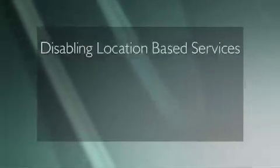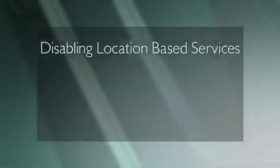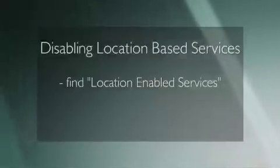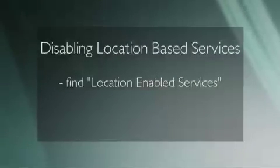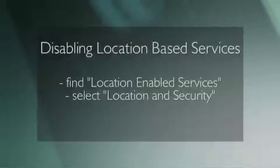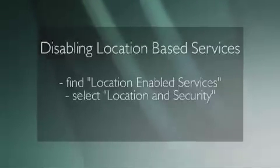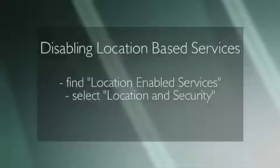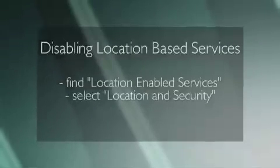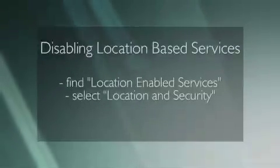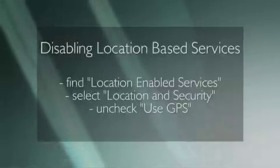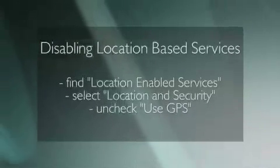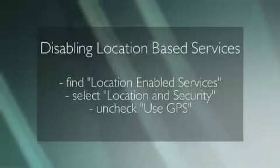To disable all location-based services, visit your device's home screen, then click on Location Enabled Services. From here, select Location and Security, which should be about halfway down the screen. You'll note that Android's default setting for location-based services is on. To disable location and security for all apps, uncheck the Use GPS Satellites option. Please note that this will prevent you from using apps like GPS or navigation systems.